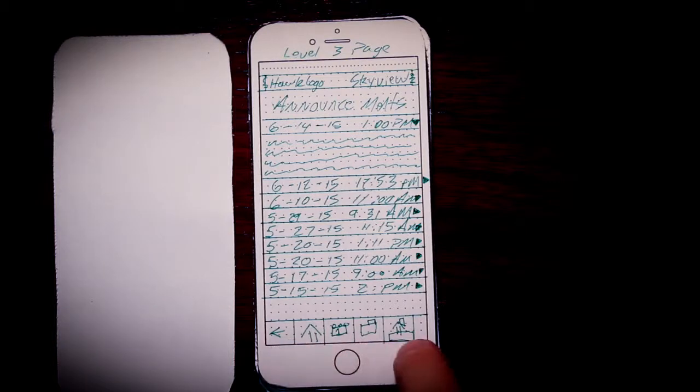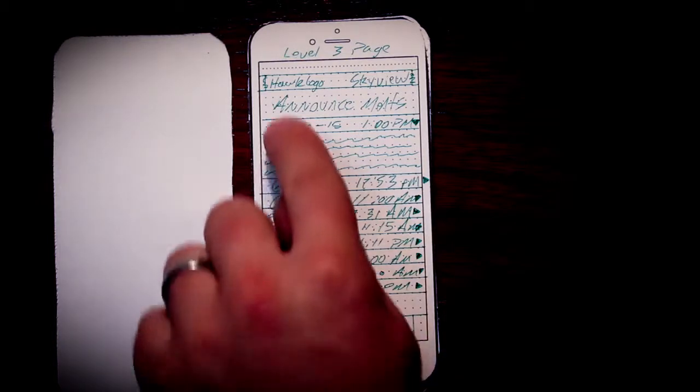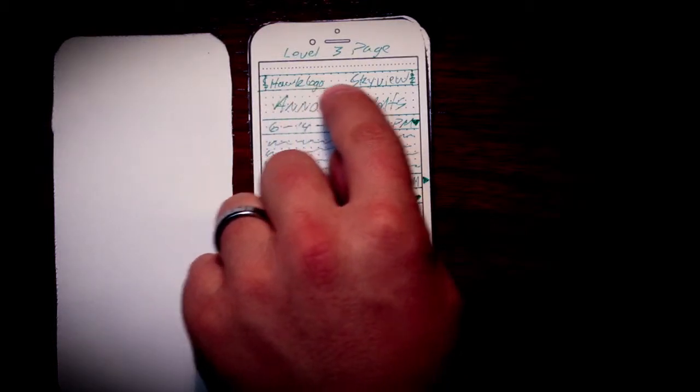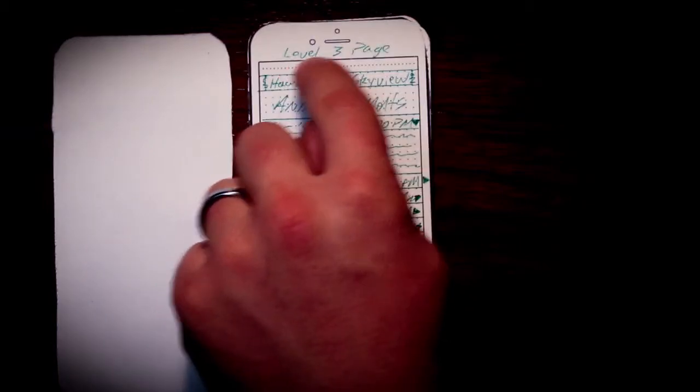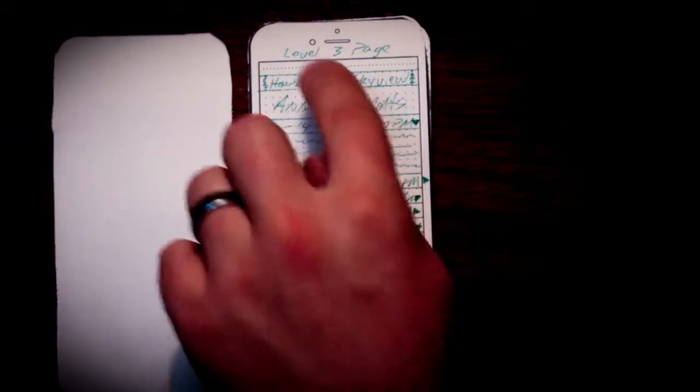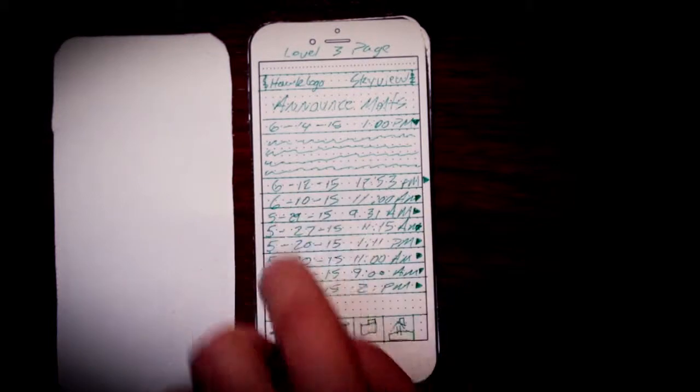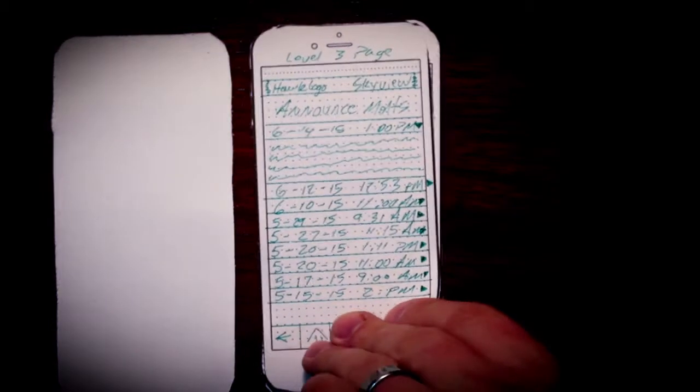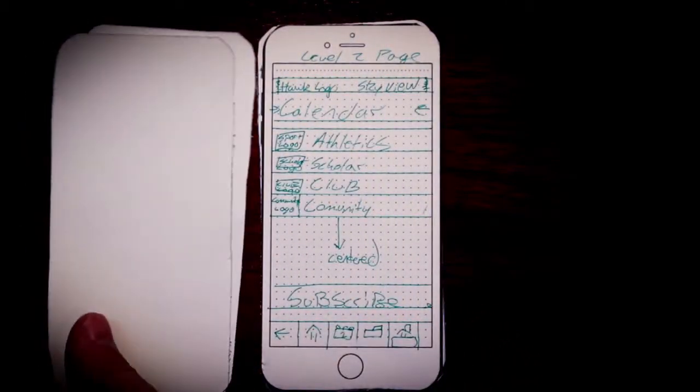And again, we kept consistency with the same bottom bar. We've moved this Hawks logo to the top with Skyview. That'll stay there. This is a level three page. Level three are the ones that open up to details like that. So the next page is a level two page.